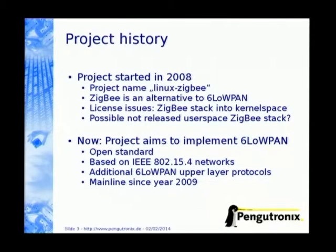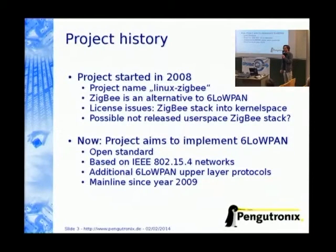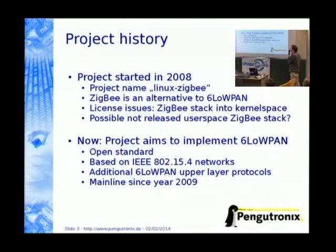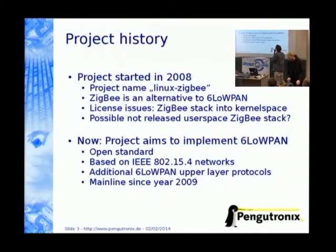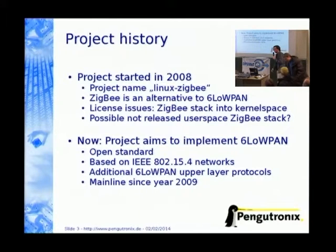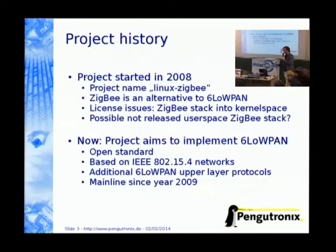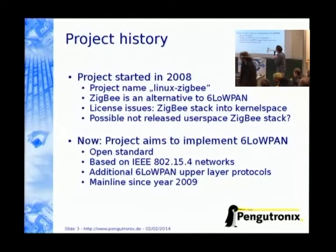The project started in 2008 and has the name Linux ZigBee. I think you all know what Linux is, but what the hell is ZigBee? The thing is, we don't make any ZigBee implementation in this project, and some people get confused and ask a lot of ZigBee questions on the mailing list. ZigBee is simply an alternative to 6LoWPAN, running on top of IEEE.4. There were some license issues to bring the ZigBee stack into kernel space, so now we implement 6LoWPAN — it's an open standard based on IEEE.4 — and additionally we want to implement some upper-layer protocols for routing and application. The code has been mainline since 2009.